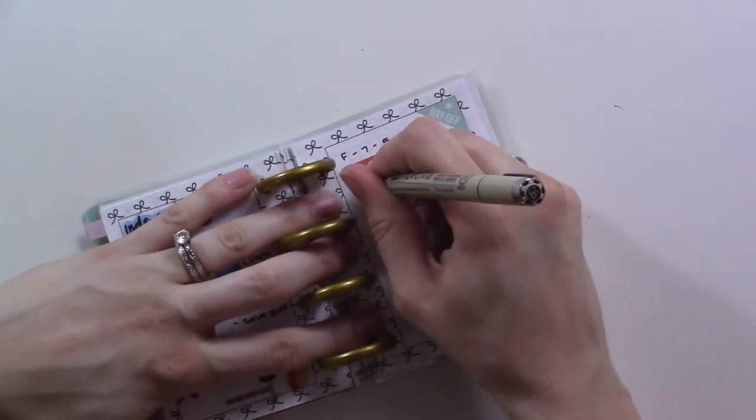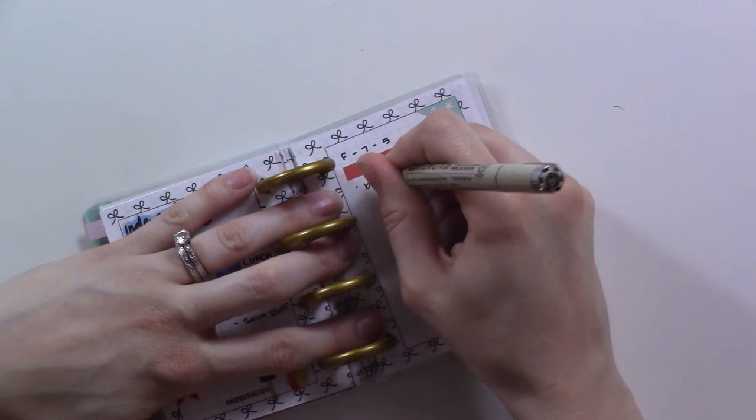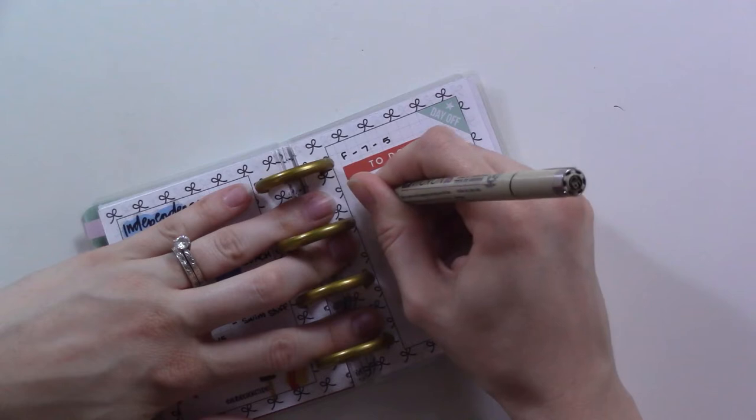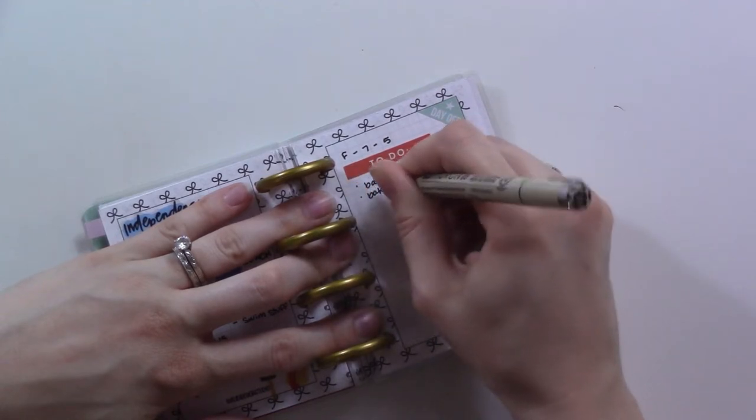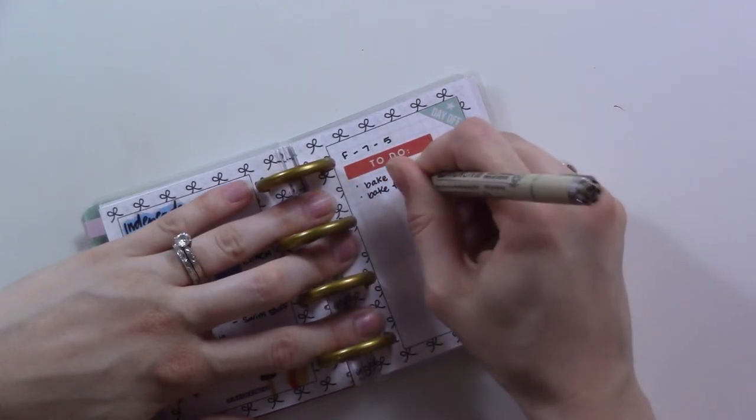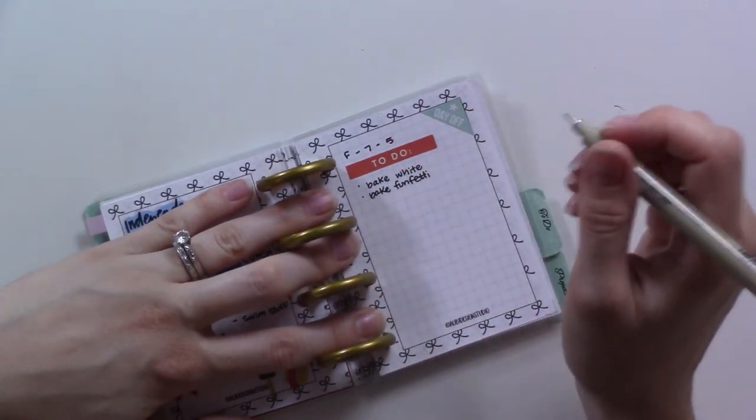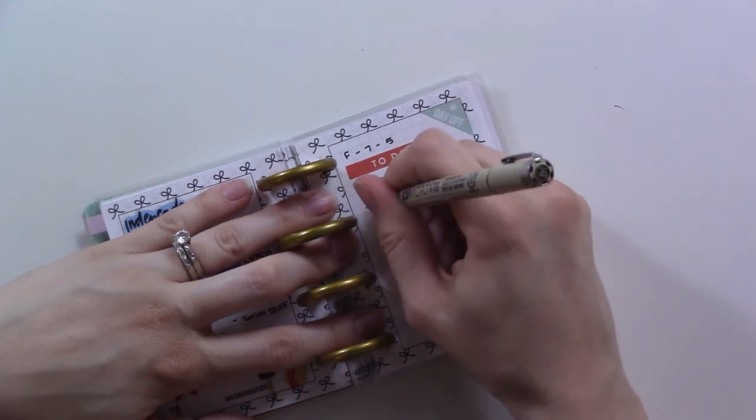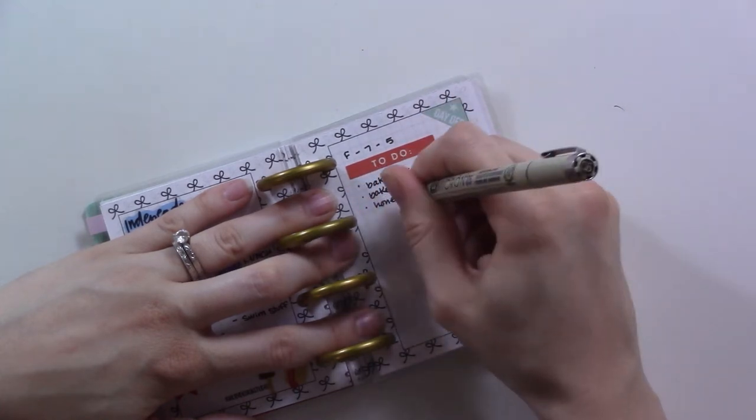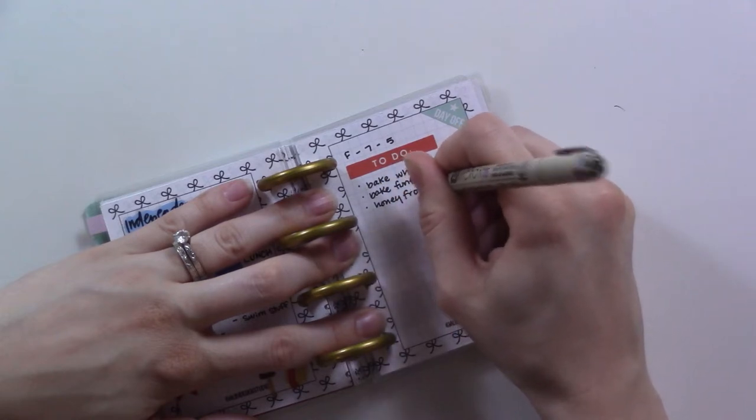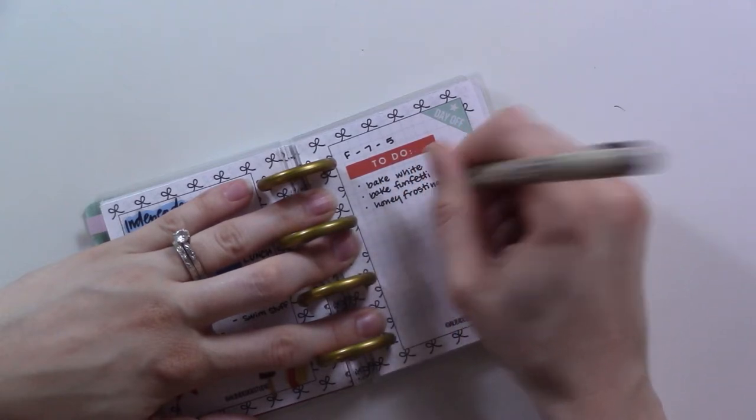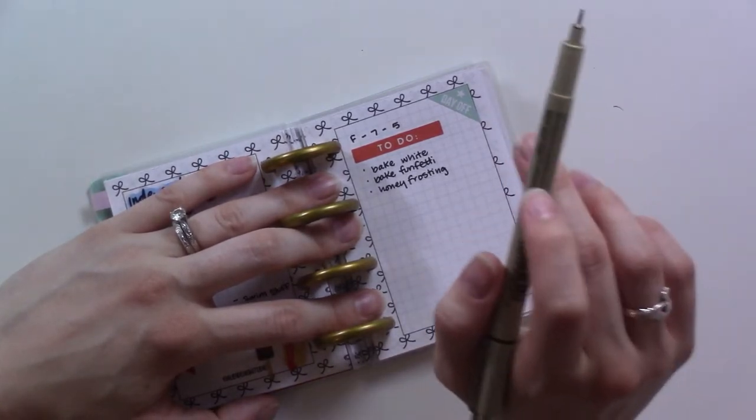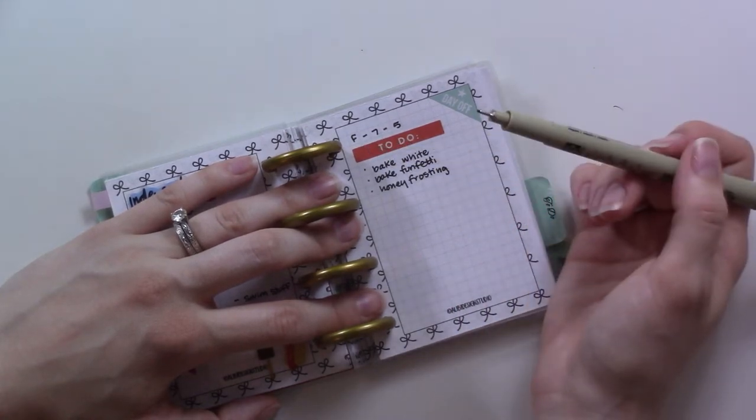Let's see. We bake the white cake and then we bake the funfetti cake. There's two different kinds. We already have funfetti icing. And then we need to make the honey frosting. Like I've mentioned before, it's a Winnie the Pooh theme. So there's a lot of bees going on. And also, if you didn't know, babies aren't supposed to eat honey until they're a year old.